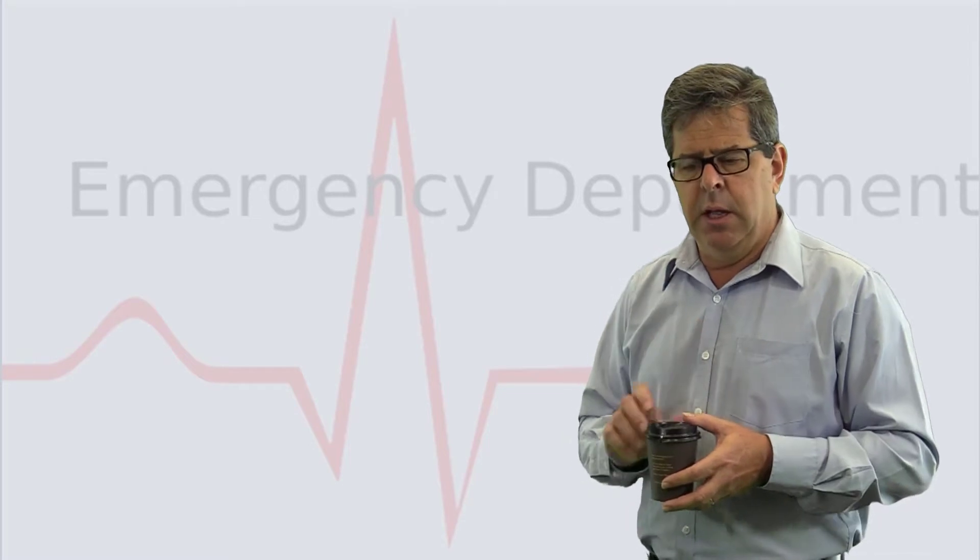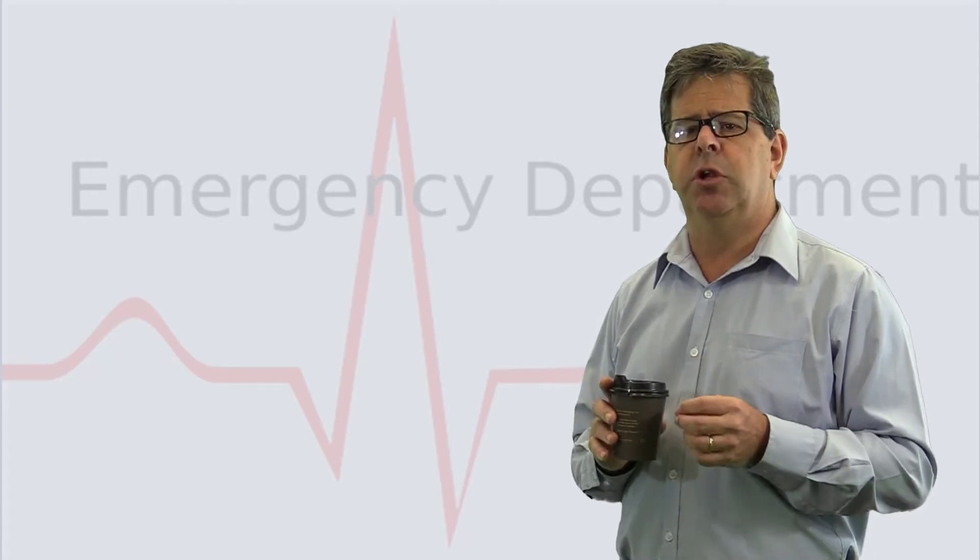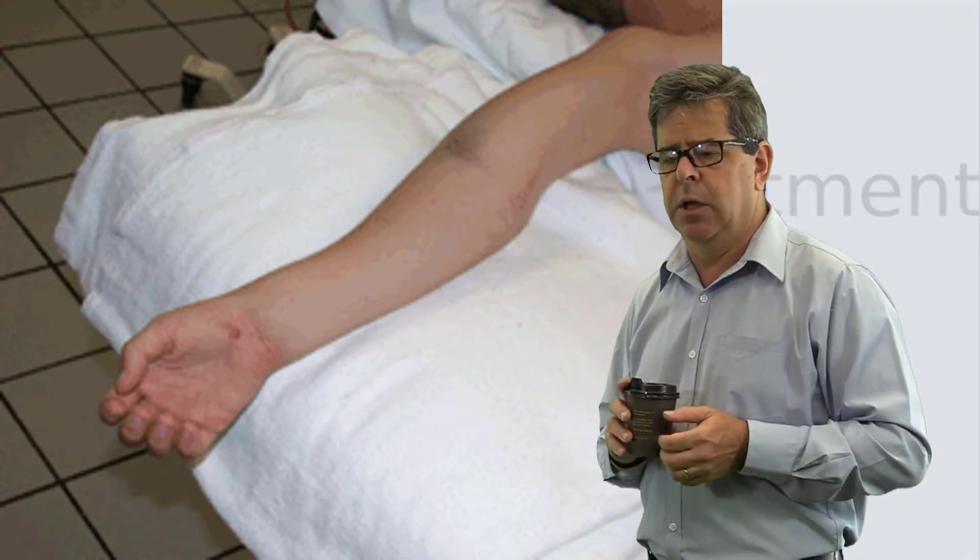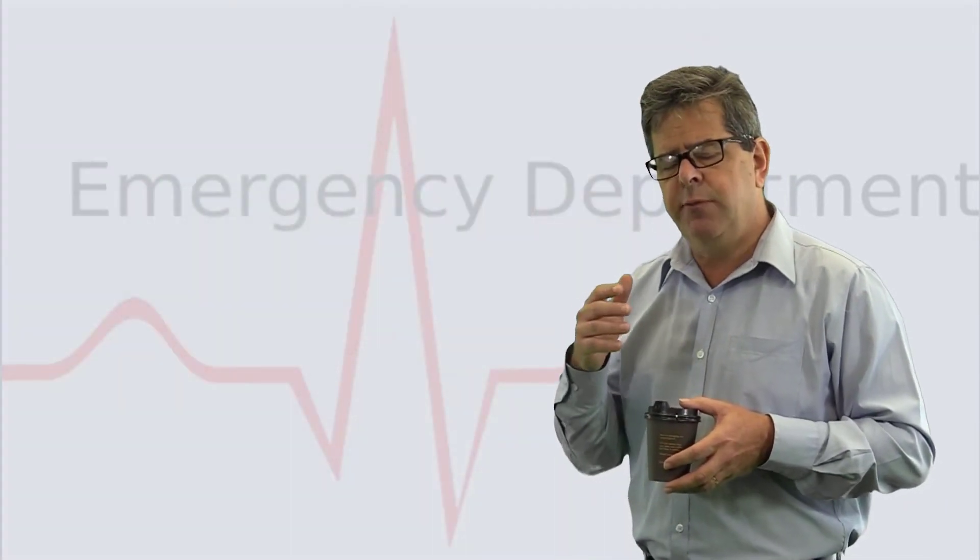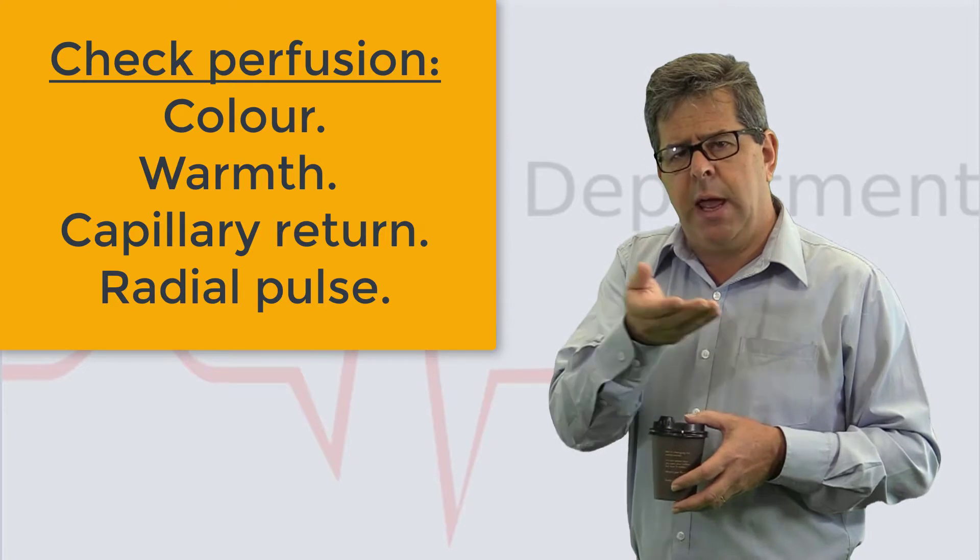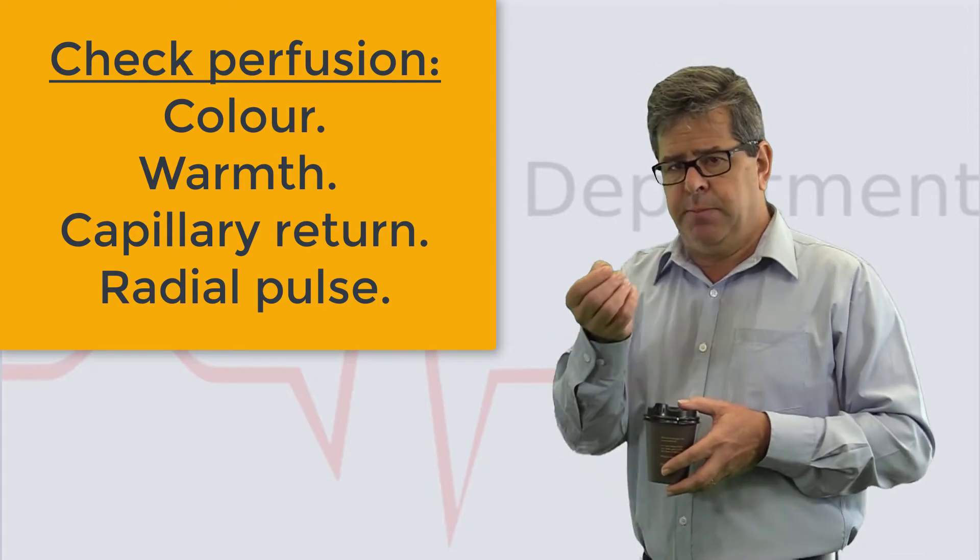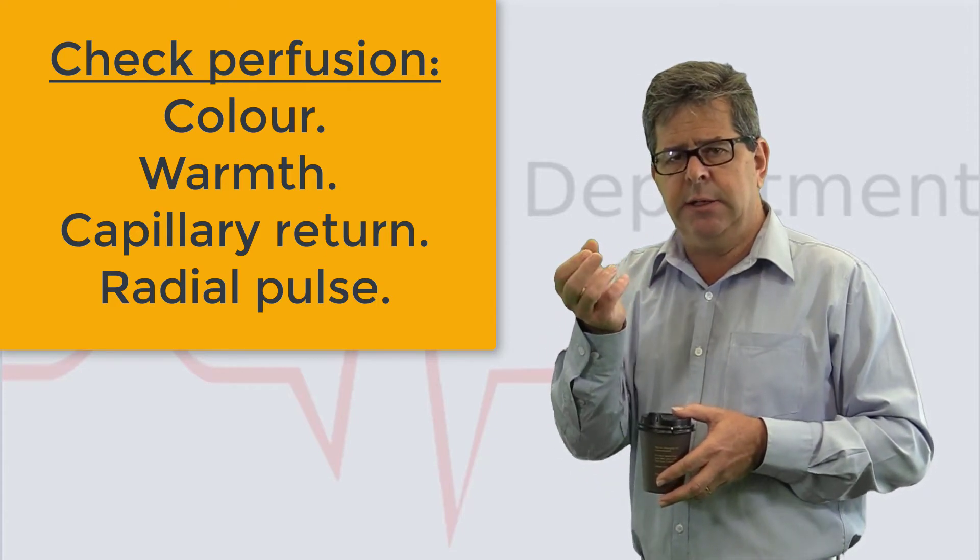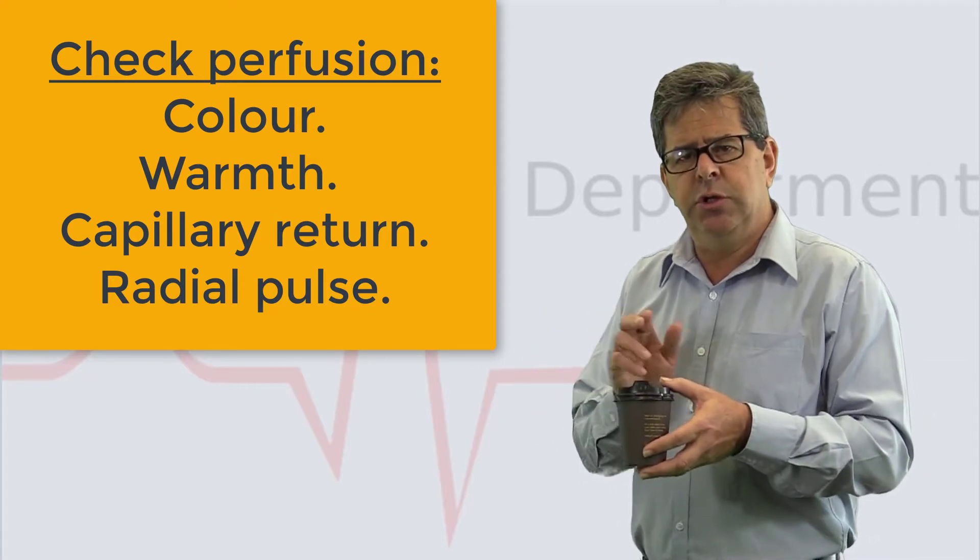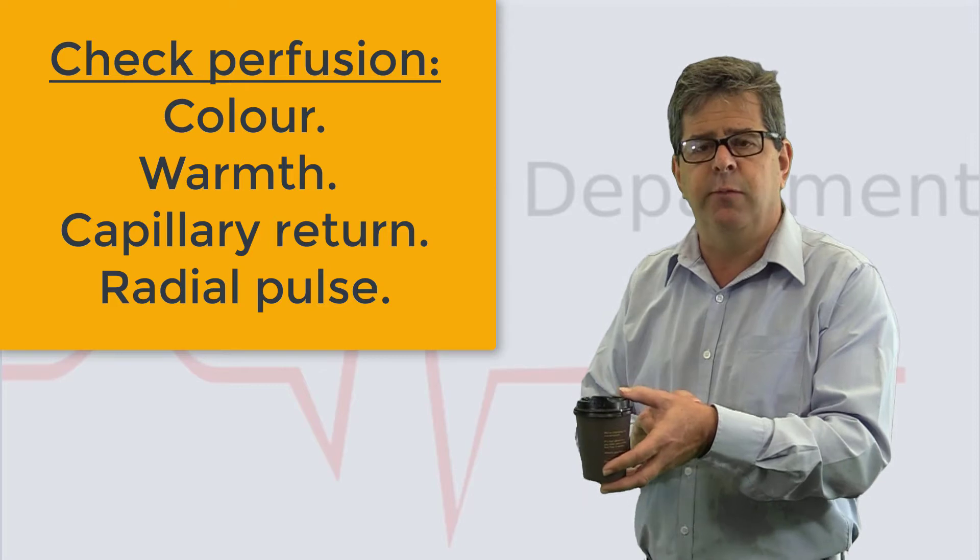Once you've got that, you need to examine the hand. You examine the perfusion of the hand and fingers. Check if it's dusky, feel the temperature of one hand compared to the other, check capillary return by squeezing the area, and gently check for a radial pulse and what the volume is compared to the other side.